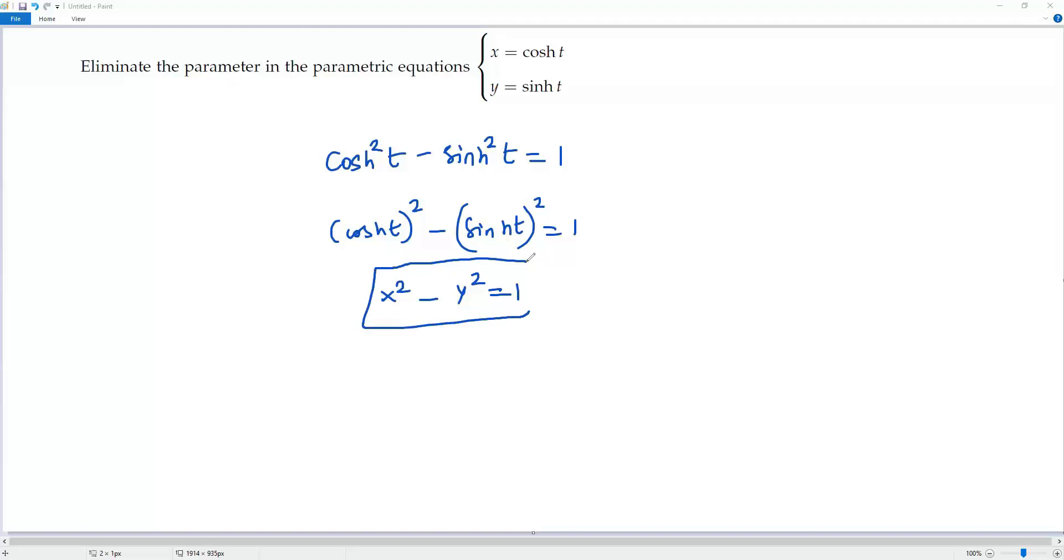So in this equation there is no parameter t. That is, we have eliminated parameter t and we got the equation in terms of the two variables x and y.